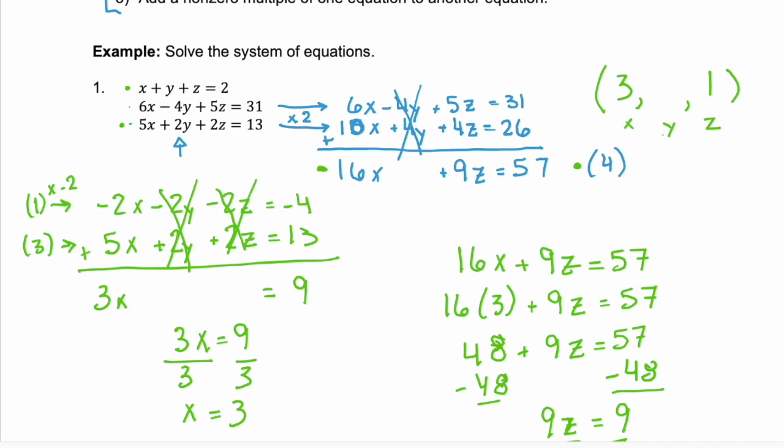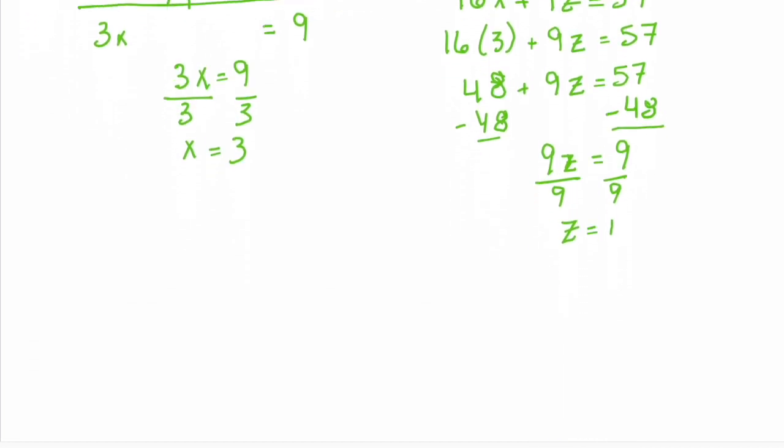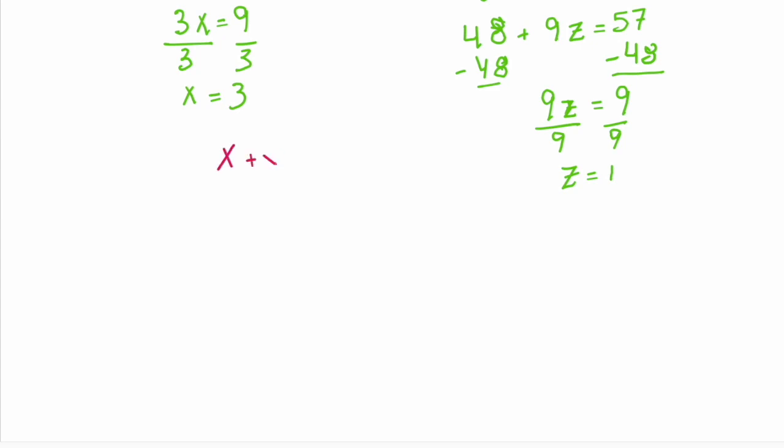Well now we have x and we have z, we just need y. So come back to your original equations. Which equation do you want to use to find y? Yeah, that first equation. Because our first equation is x + y + z = 2. It's going to be the easiest. We substitute in our x, which is 3. We don't know y. We substitute in our z, which is 1. Then we're going to solve. Combine our like terms on the left and we have 4 + y = 2. Subtract 4 from both sides and we get y = -2.